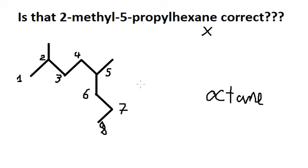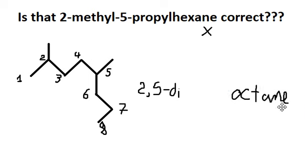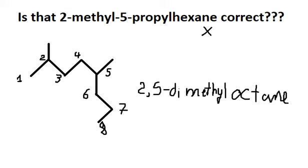We have substituents at positions 2 and 5 — dimethyl. And that is the correct name of this compound: 2,5-dimethyloctane. This is the end. Thank you for watching, see you soon!